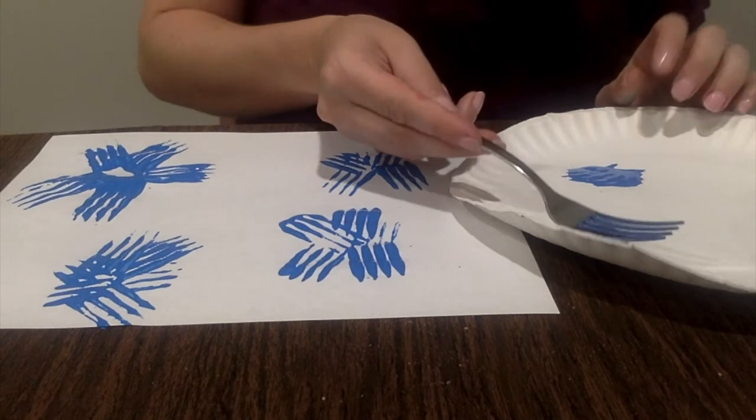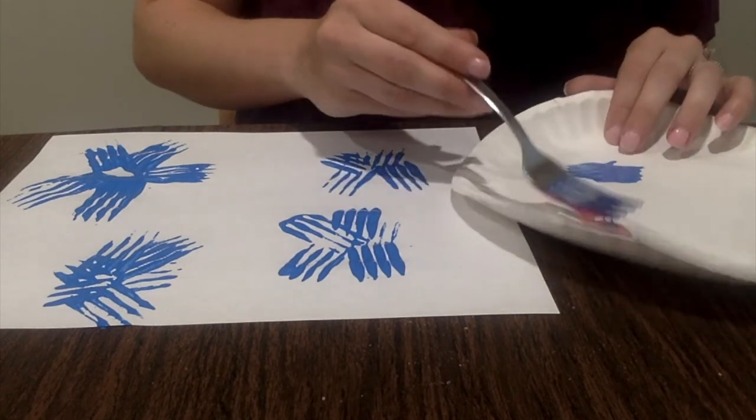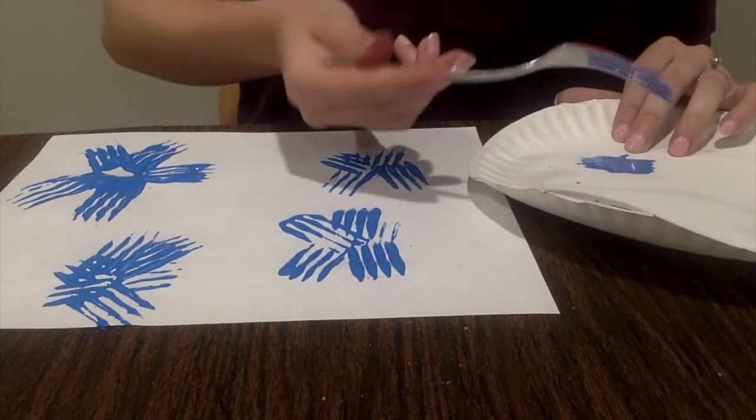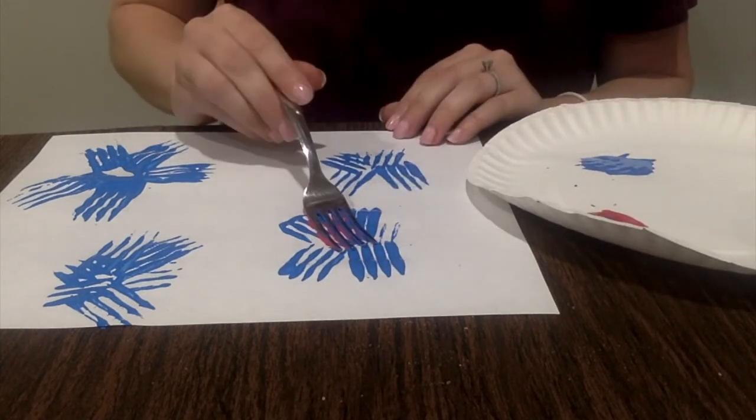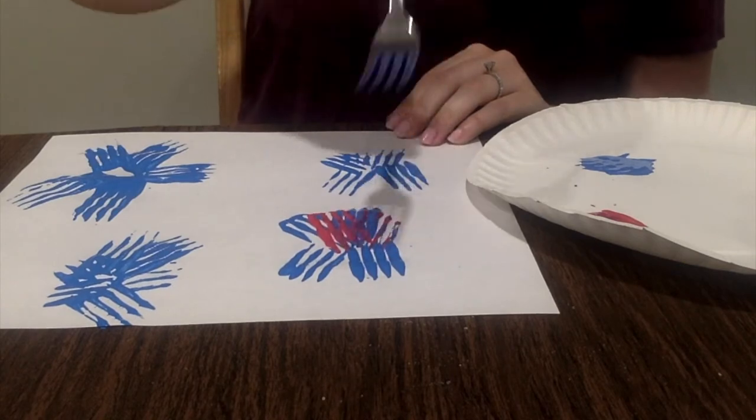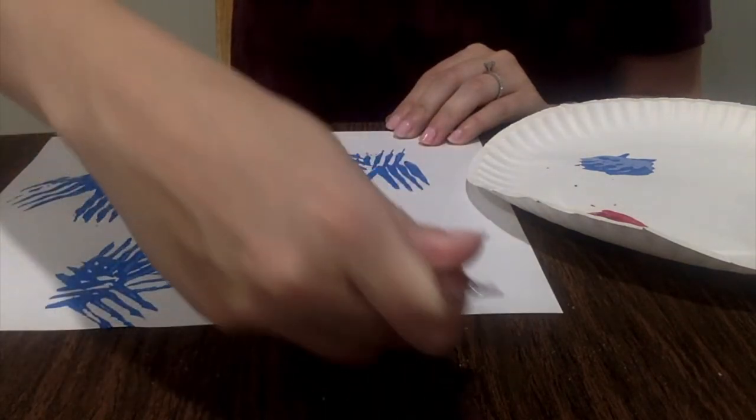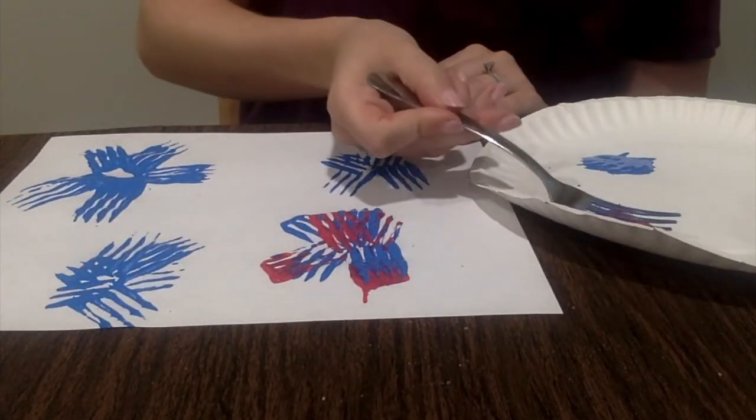Now I'm just going to use my second color. I'm going to use red this time and I'm just going to go over some of the blue. I covered my fork and then we're just going to push. You can use any colors you want, but I'm sticking with the red, white, and blue theme for 4th of July.